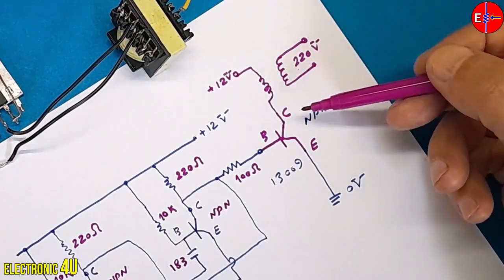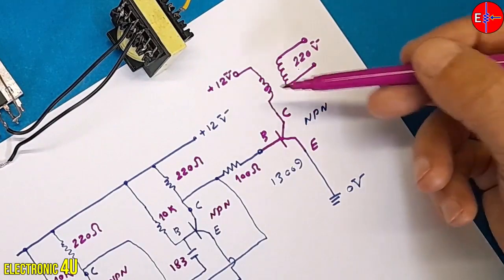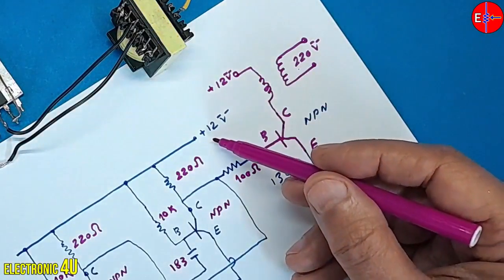The voltage is introduced into the primary winding, and upon passing through, it reaches the collector of the switching transistor. This is the same voltage utilized in the oscillator circuit.